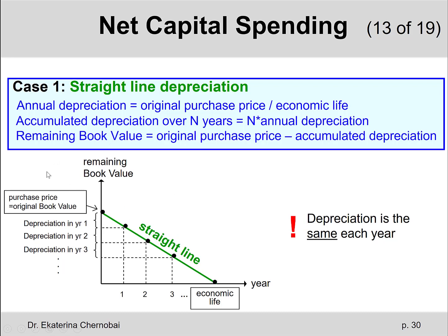If you're interested in calculating how much value has been lost over a specific number of years, take that number of years and multiply by the annual depreciation. For example, after five years, we have five multiplied by the annual depreciation amount — that's the accumulated depreciation. Then after any number of years, we can calculate the remaining book value by taking the original book value (the purchase price) and subtracting all accumulated depreciation up to that point.